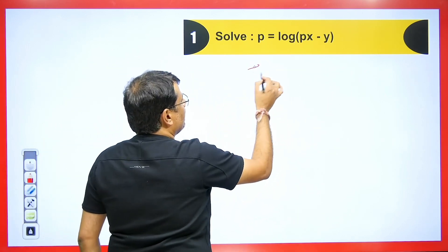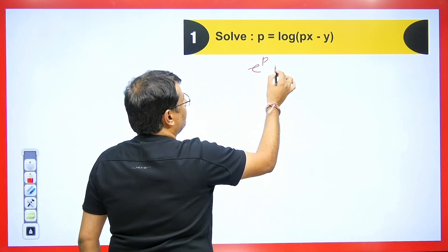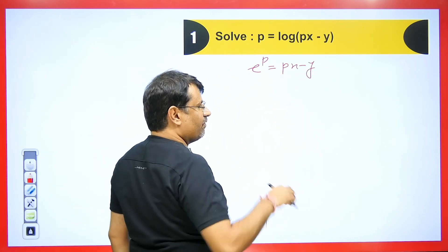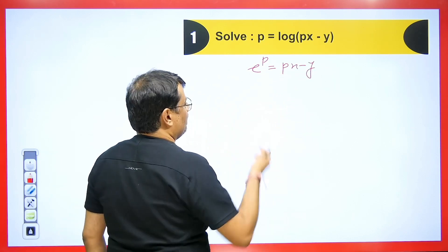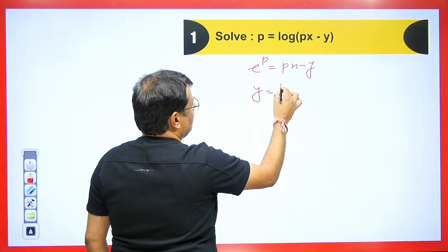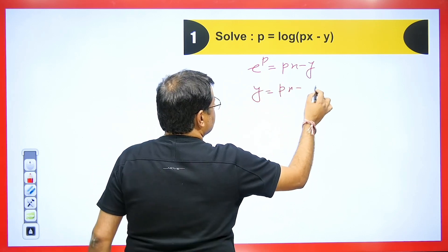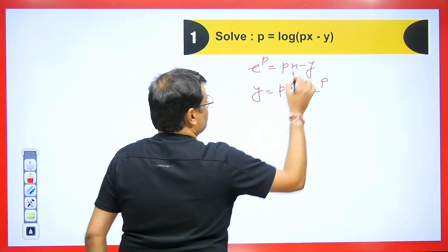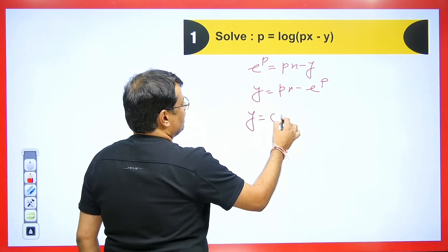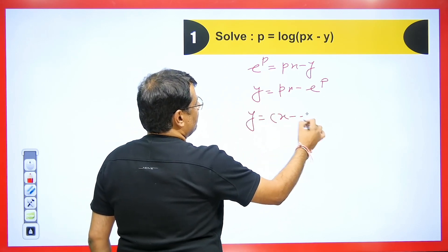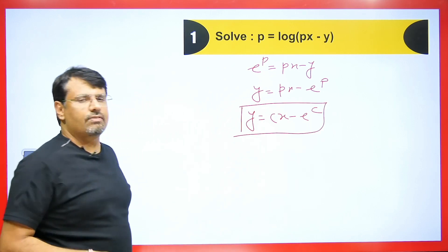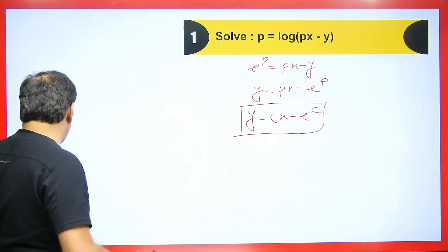Now it is in the Clairaut's form. So wherever there is p, we will put c and we will get the answer: y = cx - e^c. It is a very easy concept. You can solve it like this.